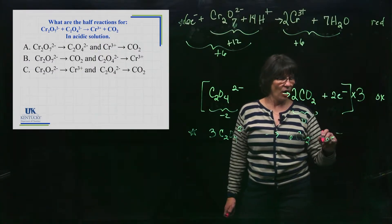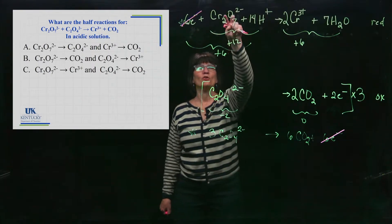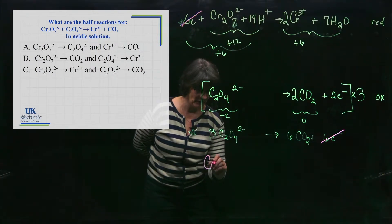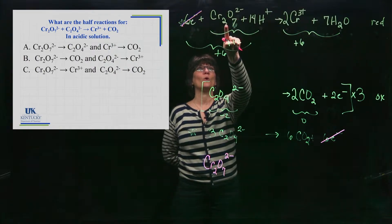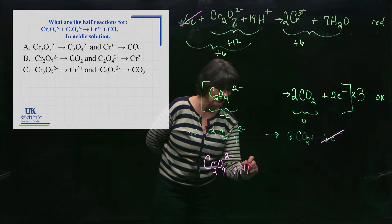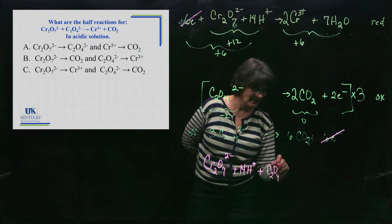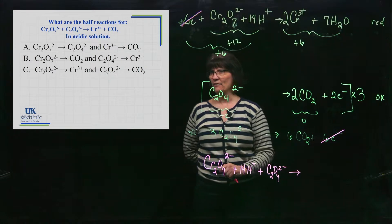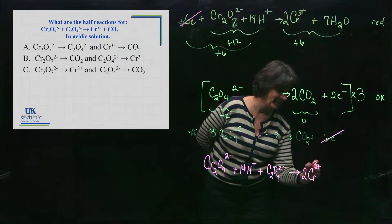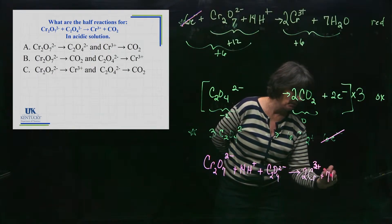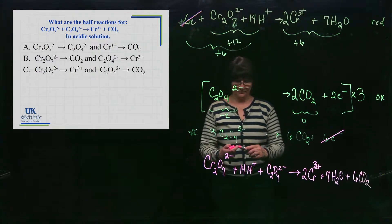Now I add the two half-reactions together and cancel anything that's the same on both sides. The six electrons cancel. I don't see anything else to combine or cancel. Bringing it all together on the reactant side: Cr₂O₇²⁻, fourteen H⁺, and three C₂O₄²⁻. On the product side: two Cr³⁺, seven H₂O, and six CO₂.